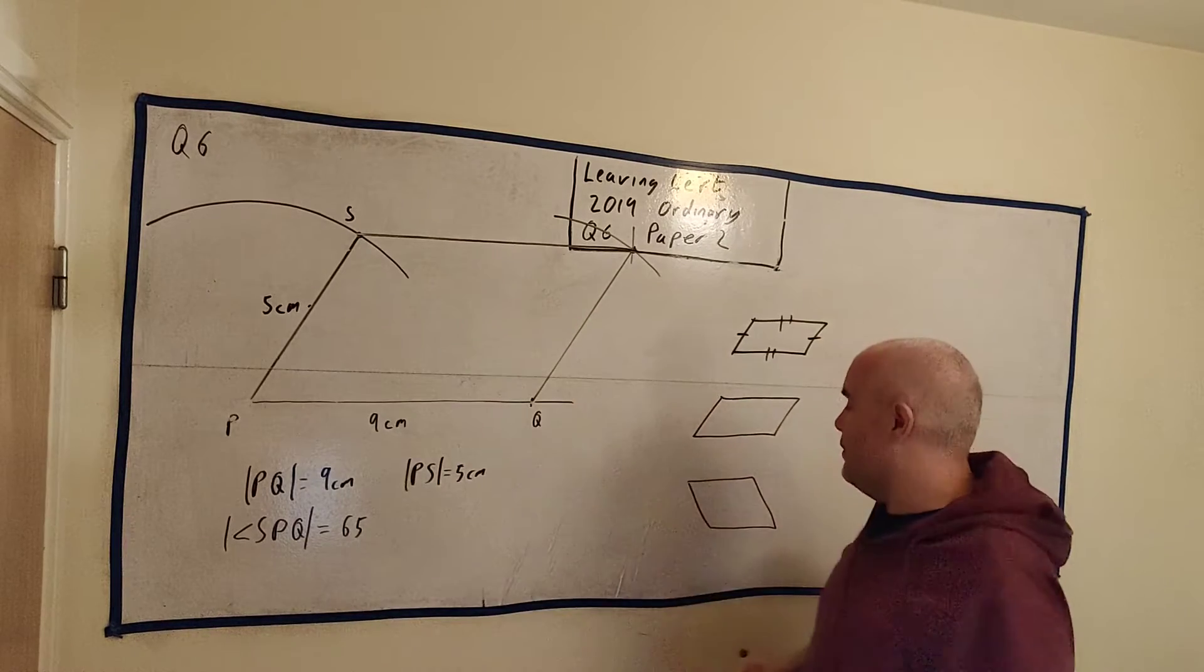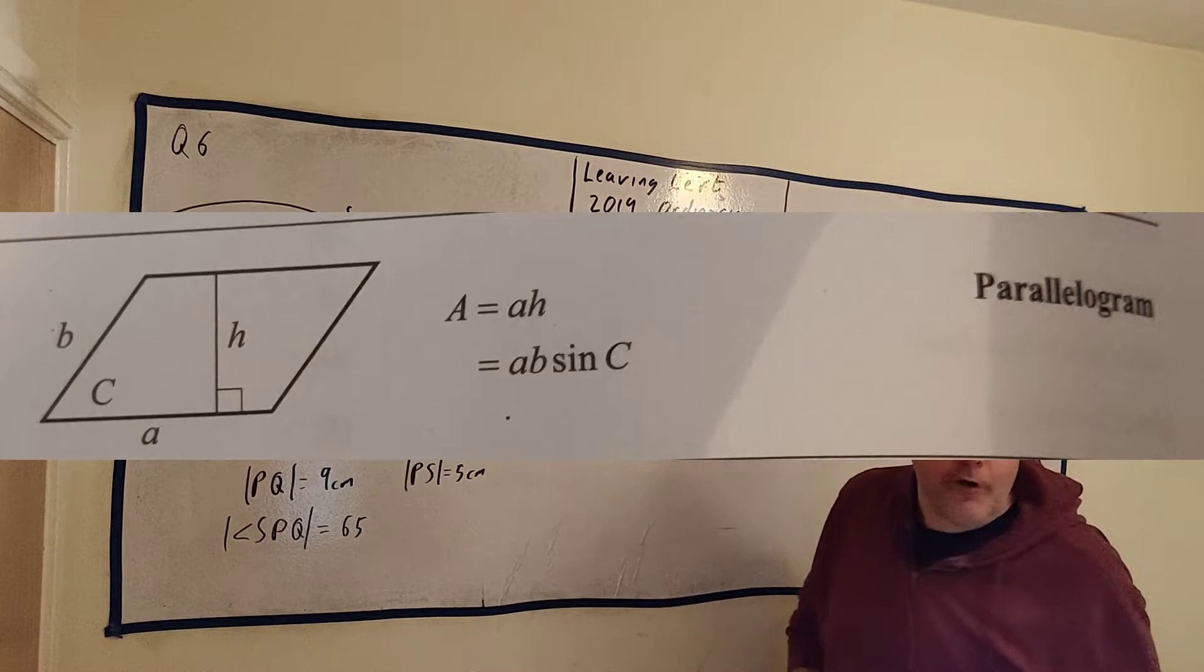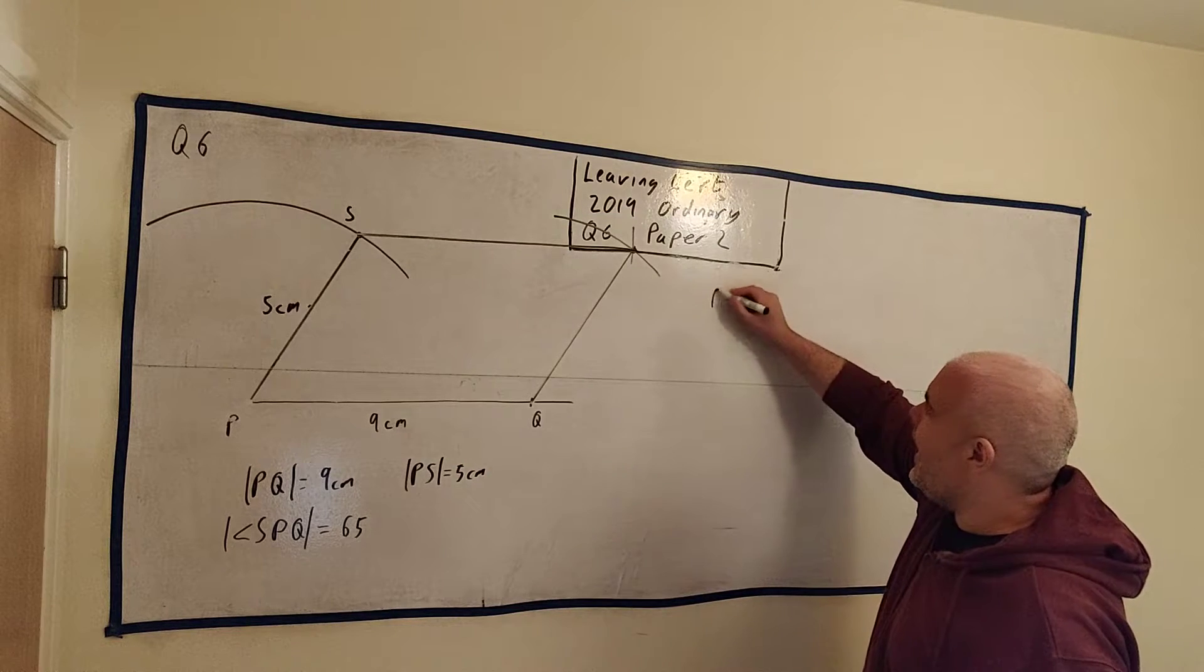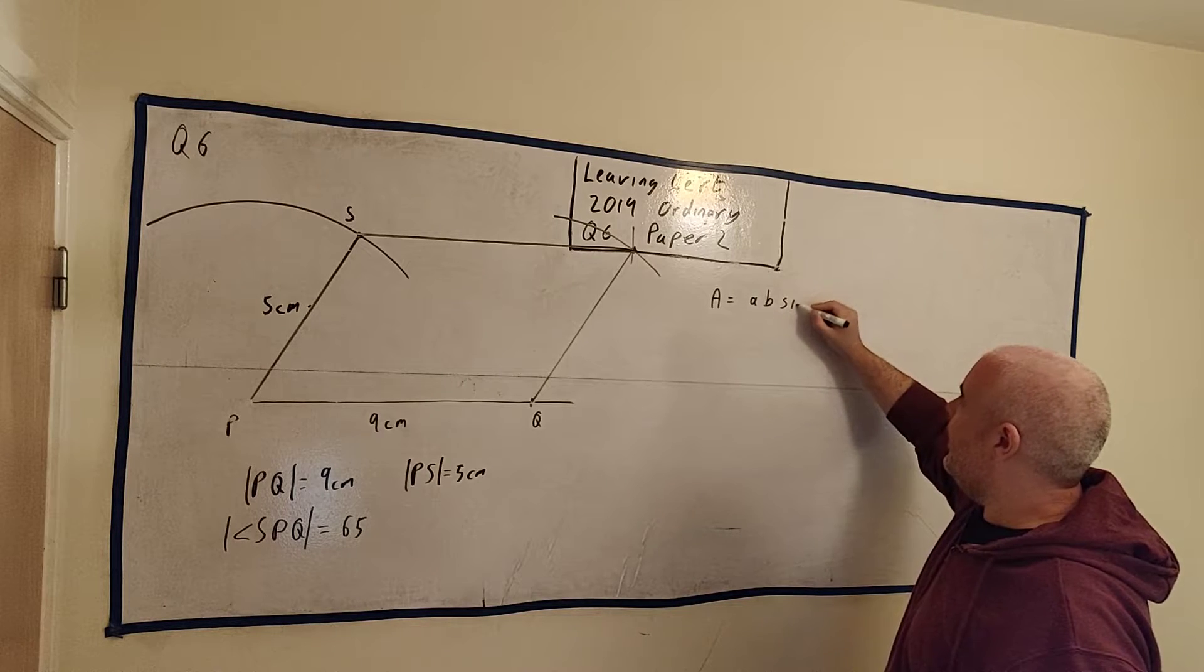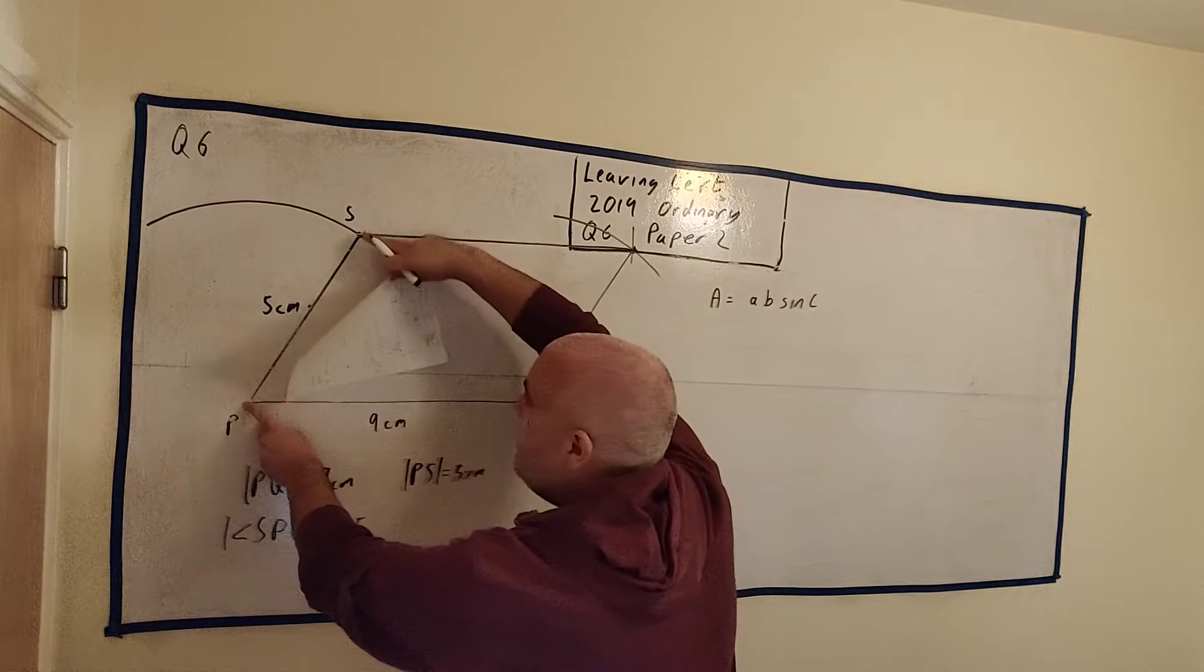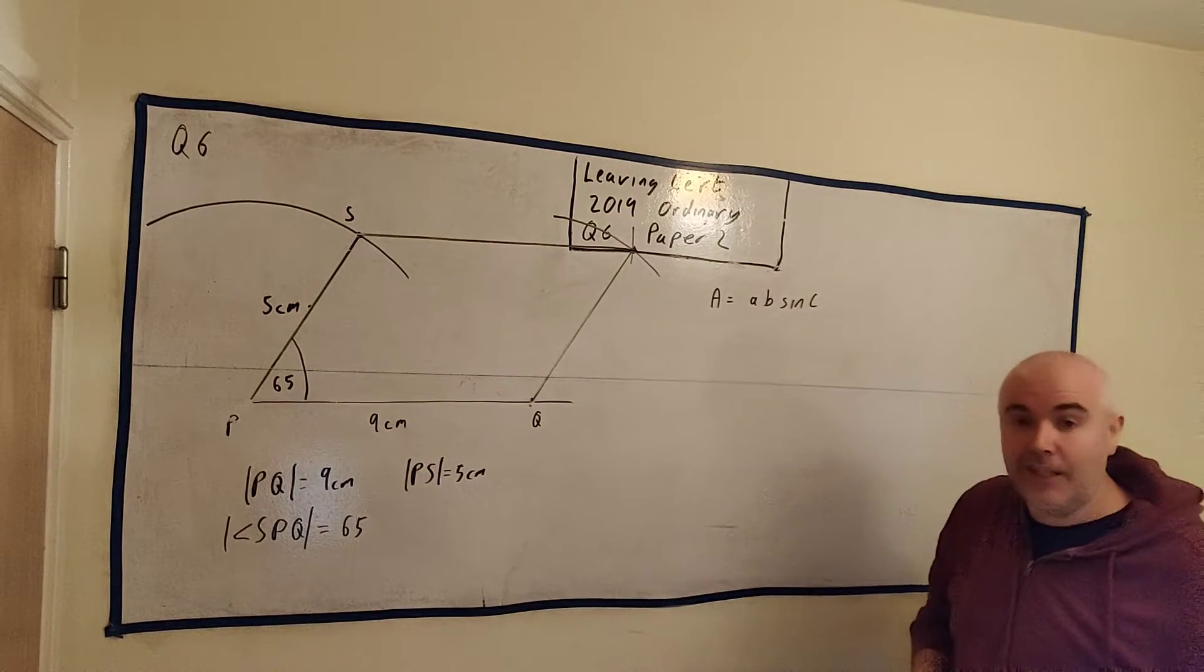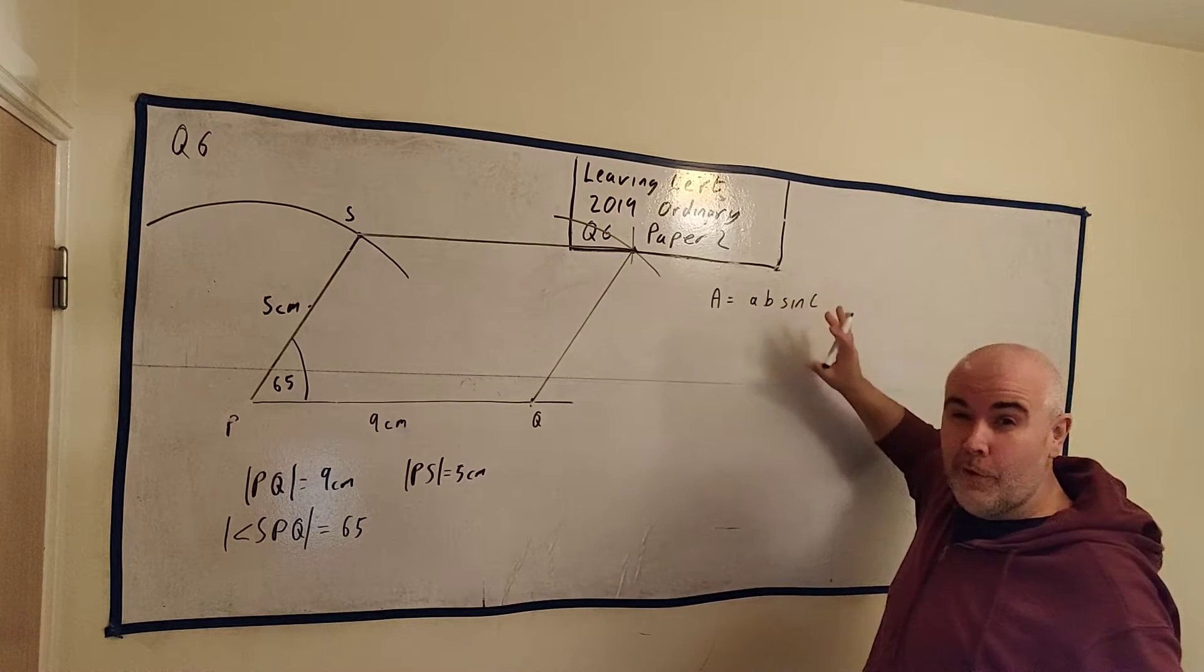They then ask us to find the area of this parallelogram. Now there is a formula in our tables. I'll put it up on the screen right now that tells us the area of a parallelogram. It is A is equal to a, b, sine C, where a and b would be a length here and a length here and an angle here. All things we know.